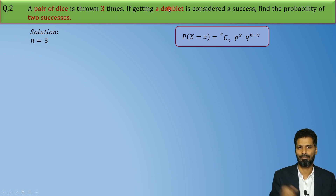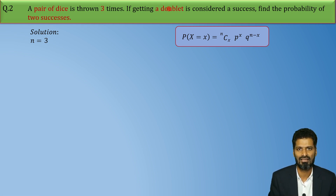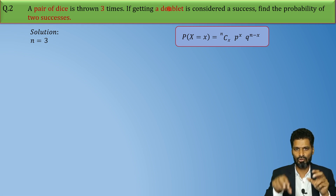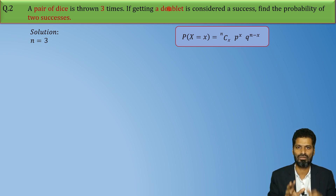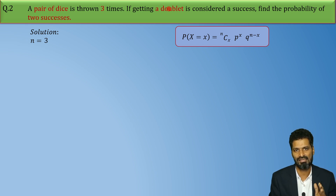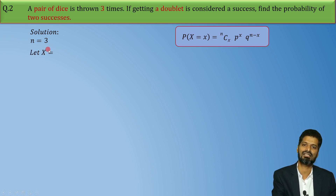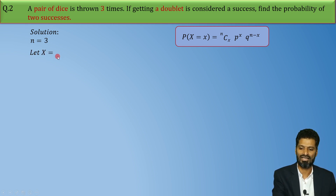Now what is a doublet? When we throw a pair of dice — two dice together — a doublet means the number appearing on both dice should be the same: (1,1), (2,2), (3,3), (4,4), (5,5), and (6,6). So if I consider our success as x, our random variable X is the number of times of getting a doublet.